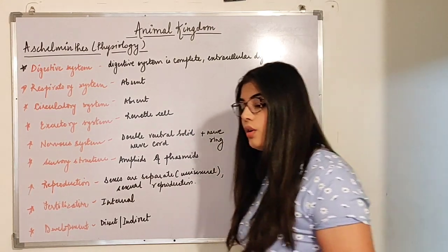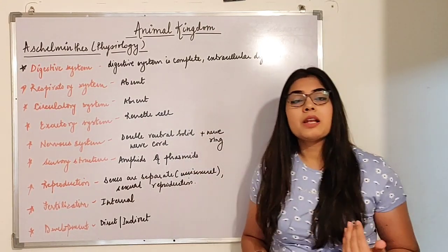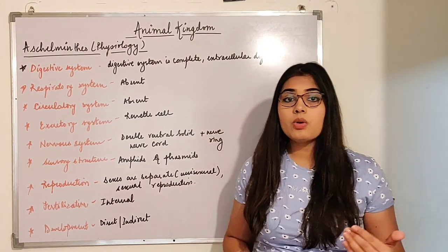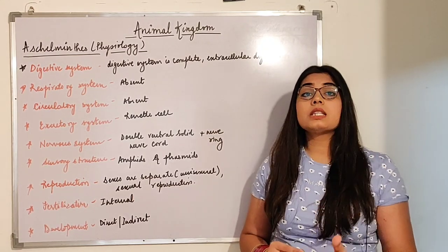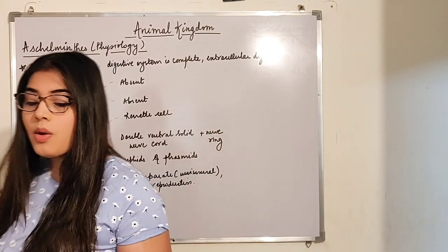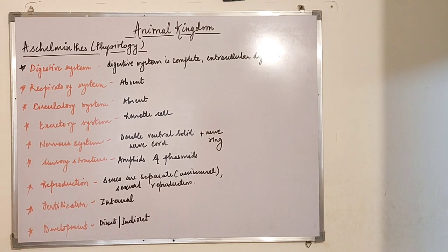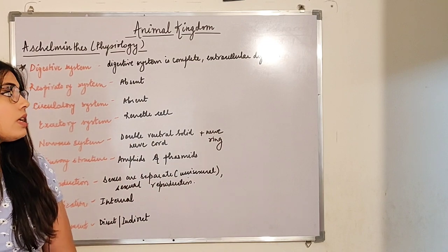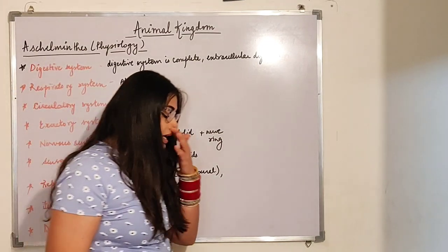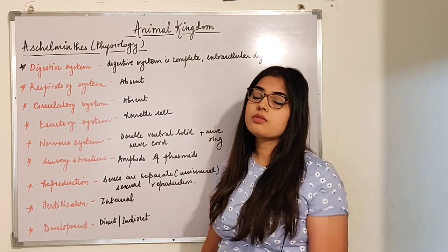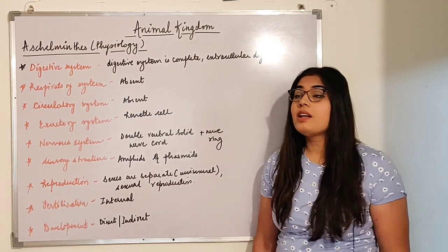In the previous video I told you that Aschelminthes can be called with different names — roundworms. What is the reason they are known as roundworms? Because when we cut them, what we observe is that in their cross-section they appear circular. That is the reason the name is given as roundworm, or also known as nematode.